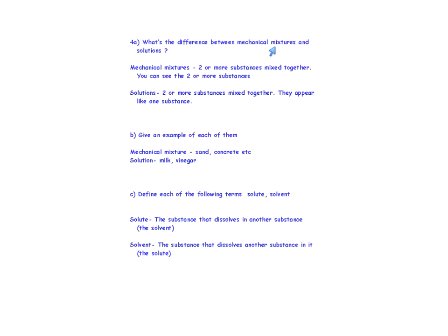Review question: what's the difference between mechanical mixtures and solutions? Mechanical mixtures have two or more substances mixed together and you can see the different substances that make it up — examples include sand and concrete. Solutions have two or more substances mixed together but they appear like one substance — examples include milk and vinegar. Define solute and solvent: a solute is the substance that dissolves into another substance, which is the solvent. The solvent is the substance that dissolves another substance in it.